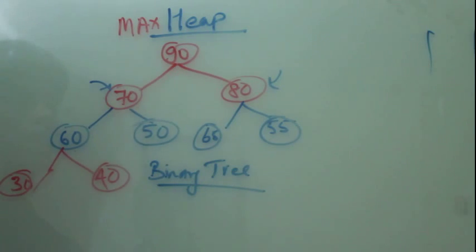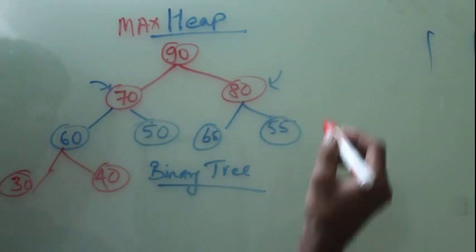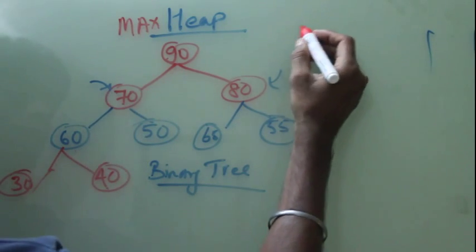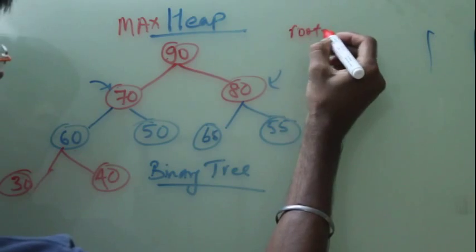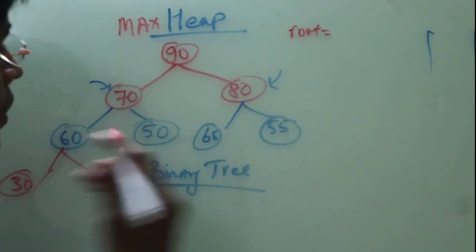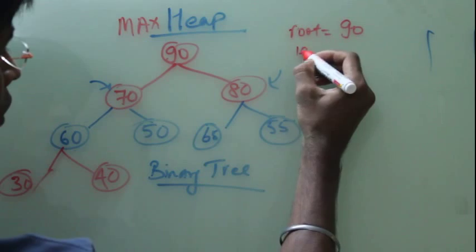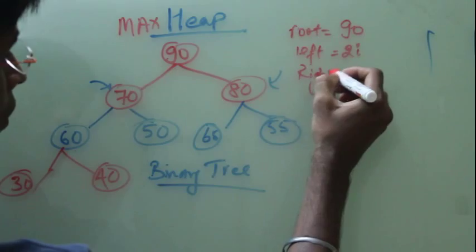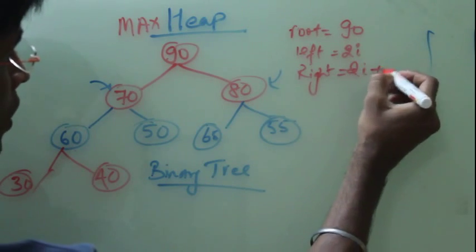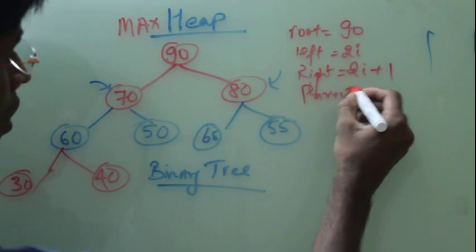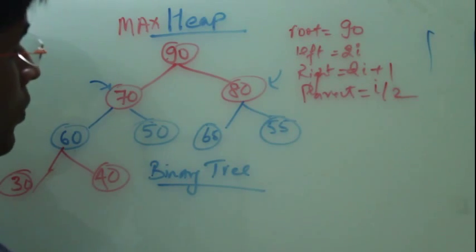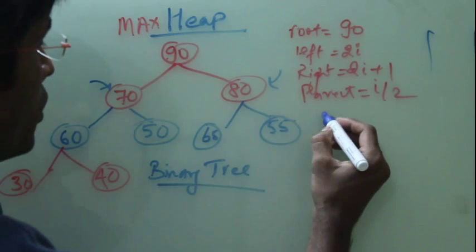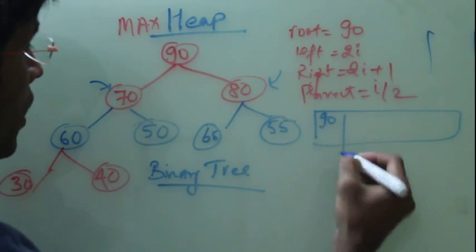So if you want to represent this in an array, what we have to do? We have to follow the binary tree convention. The root node will be stored at the first element of the array. The left child will be stored at 2 times i location. Right child will be stored at 2i plus 1. And if you want parent, it will be i by 2. So let's apply this formula. I will store 90. I will create an array. First element.